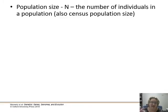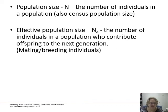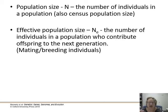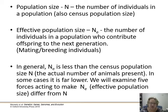Population size, N, is the number of individuals in a population — also called the census population, because if you went one by one and counted each reindeer in the herd, that's the census. We also have another term called effective population size, NE — the number of individuals in a population who contribute offspring to the next generation, i.e., the mating and breeding individuals. Not everybody has kids, so the effective population size is always smaller than the census population. In some cases it's really low if you're looking at populations that have had a massive diversity loss.